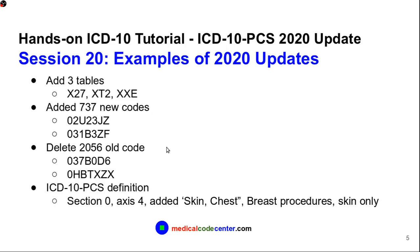Next, let's go through examples of the ICD-10 PCS 2020 updates. First, we have 3 new tables: X27, XT2, and XXE. As you know, X is for new technology. We have more new technology in the 2020 edition. Let's look at the book to see what these 3 new tables mean.